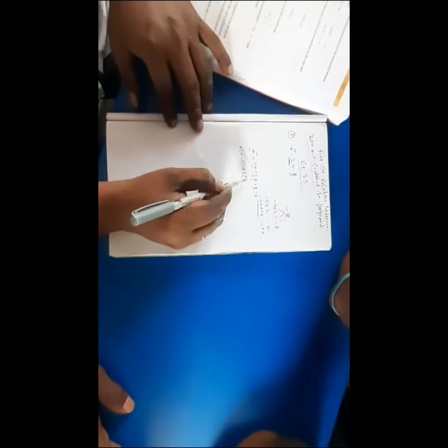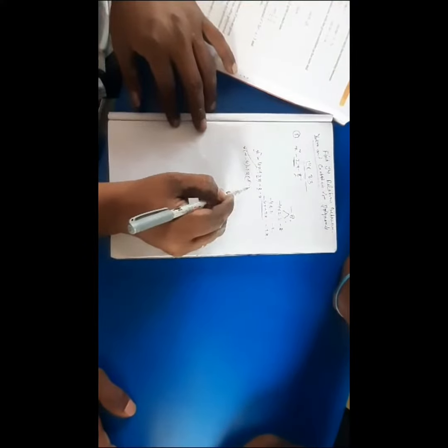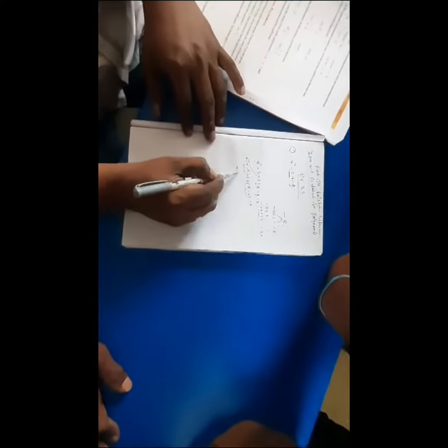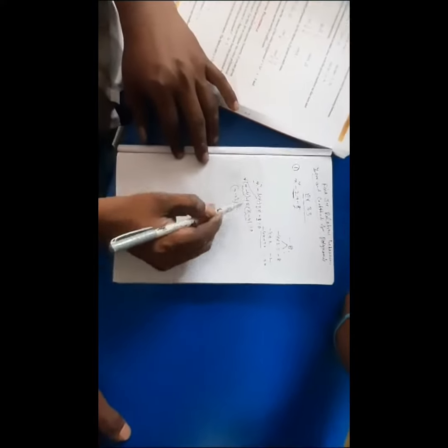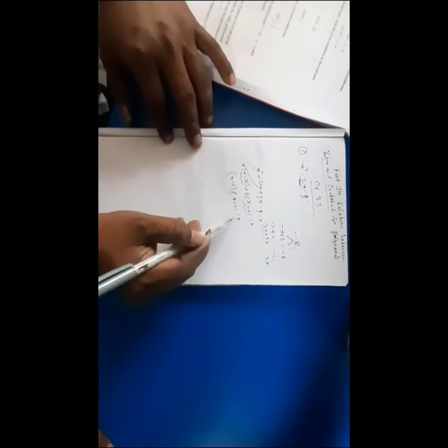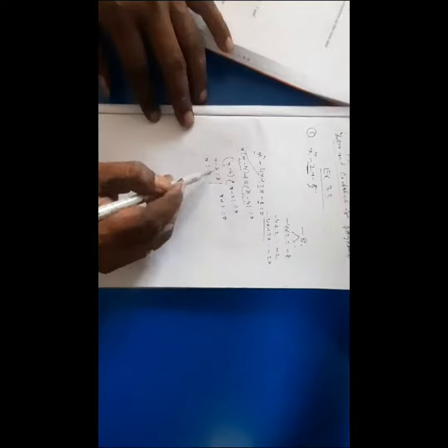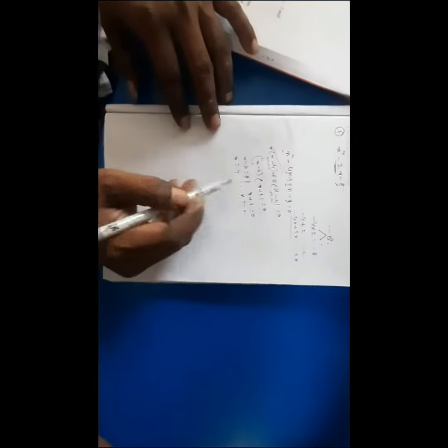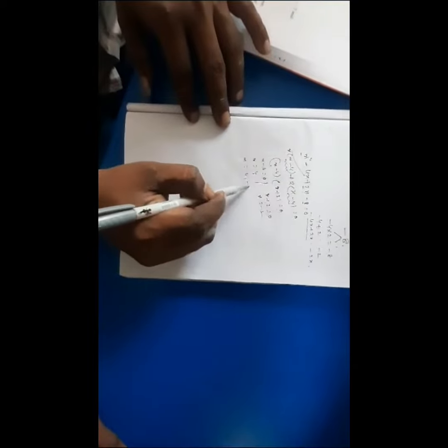x is equal to... from 2x equals 0, x is equal to... x plus 2 equals 0, x plus 4 equals 0. From x plus 4 equals 0, x equals minus 4. From x plus 2 equals 0, x equals minus 2. The values are x equals minus 4 and minus 2.